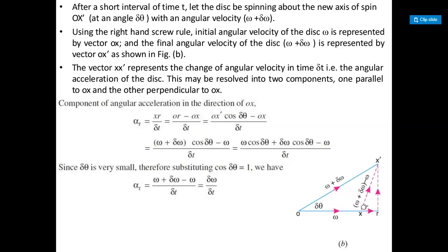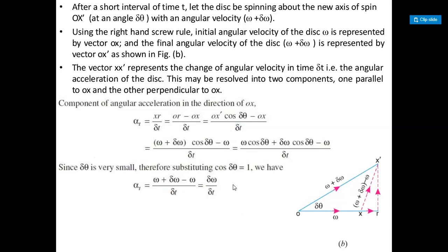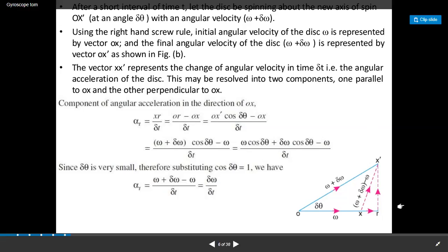So alpha_t equals (omega + delta omega) minus (omega + delta omega)cos(delta theta) minus omega. Since delta theta is a very small quantity, substituting cos(delta theta) = 1, we get alpha_t equal to (omega + delta omega) minus omega, which equals delta omega / delta t. This is the tangential component of acceleration. The radial component of acceleration is RX-dash.